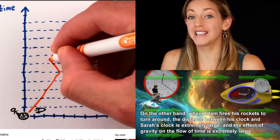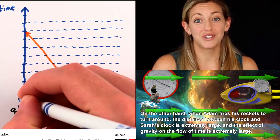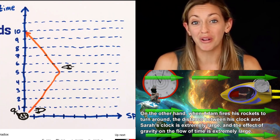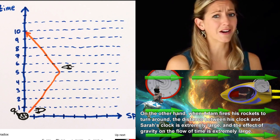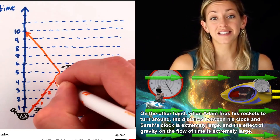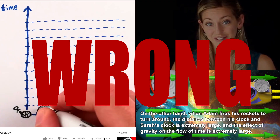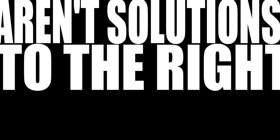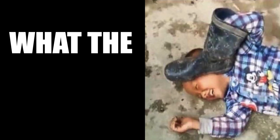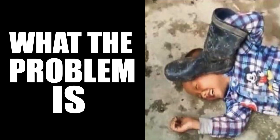There are a lot of videos on YouTube claiming to have solutions to the Twin Paradox. Unfortunately, almost all of these videos — or at least the more popular ones — are just kinda wrong. It's not that their solutions are wrong; it's that their solutions aren't solutions to the right problem. These videos don't even realize what the problem is that they are trying to solve.